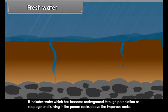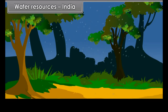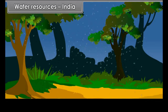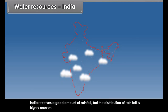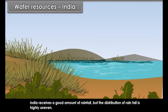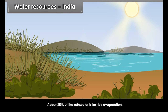Surface water resources include water in rivers and reservoirs, water in lakes, ponds and tanks, and water in the seas and oceans. Underground water is water which has become underground through percolation or seepage and is lying in porous rocks.